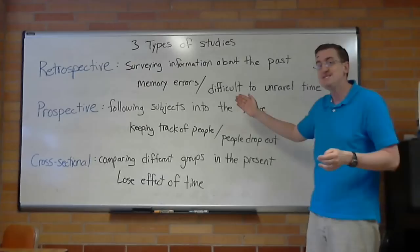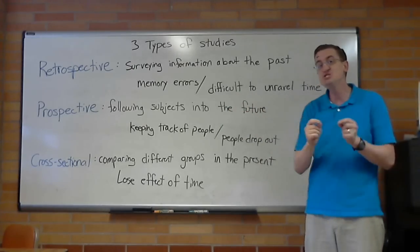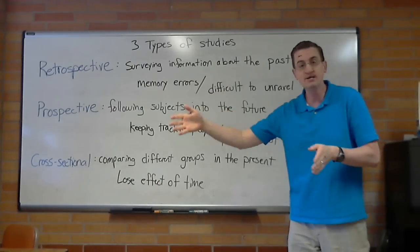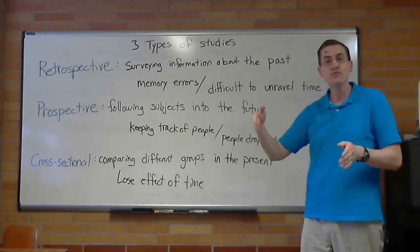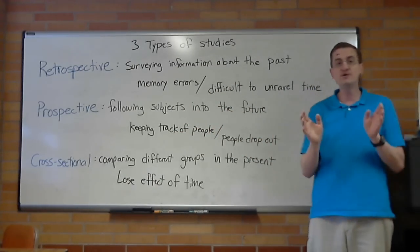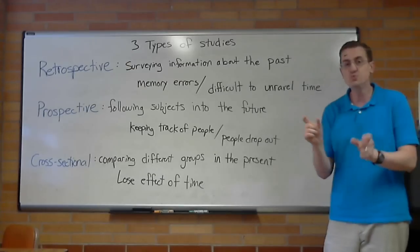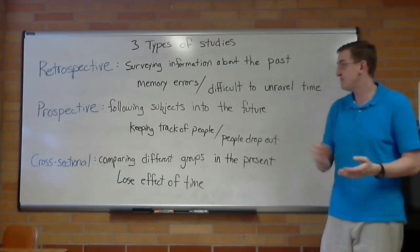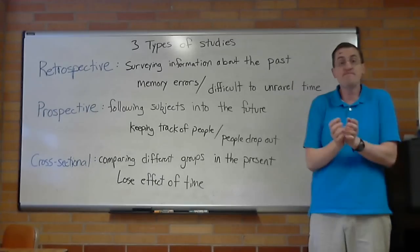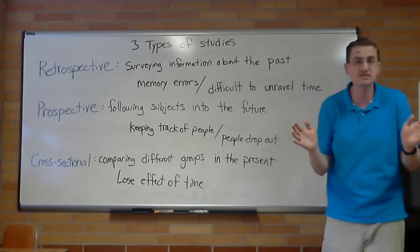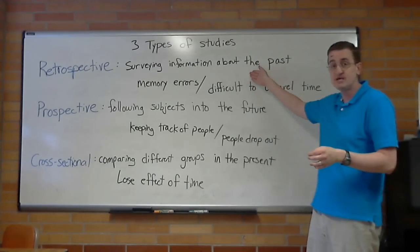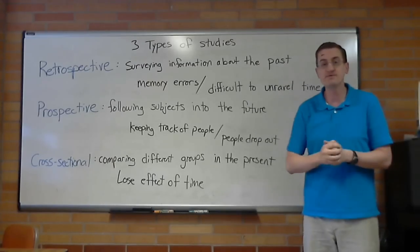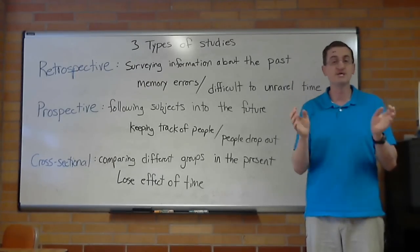But years later, he turned it into a prospective study, where he asked them years later, what kind of salary are you making? What kind of jobs are you getting? And to his surprise, children who waited for that second marshmallow did have better careers, better salary. His prospective study showed fantastic results, and that's why it's such a famous study. Retrospective, he couldn't get good answers. Prospective, he did. They were different types of errors that he was dealing with, and he was able to find good results.